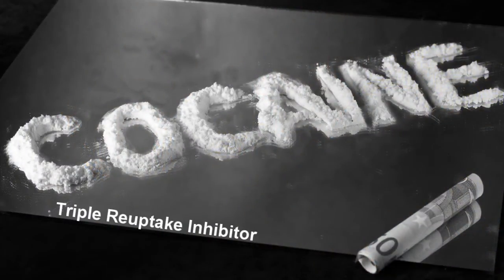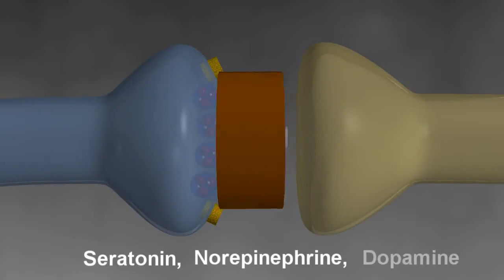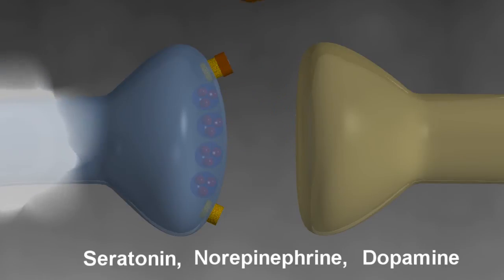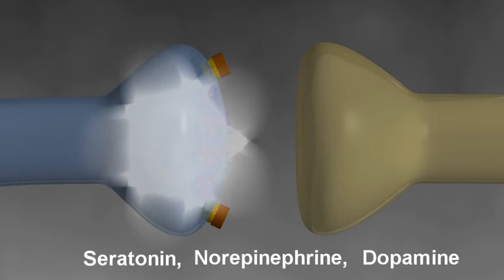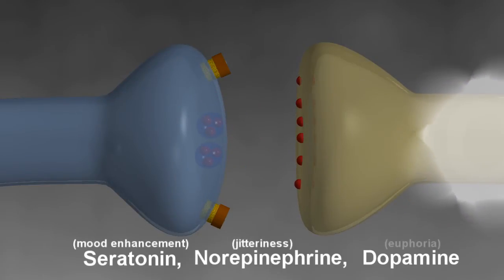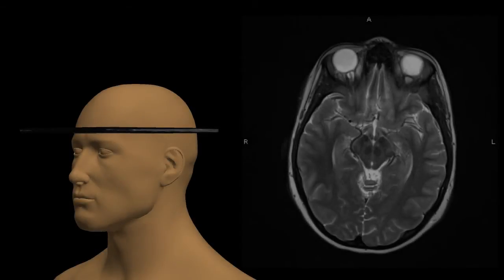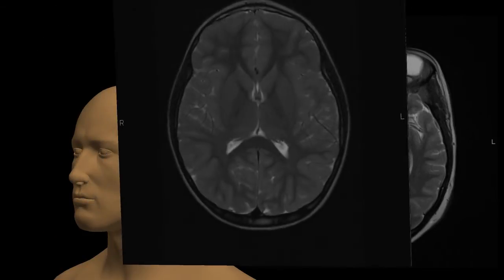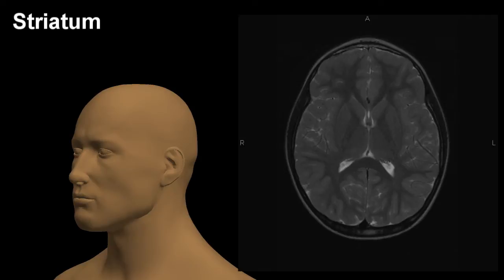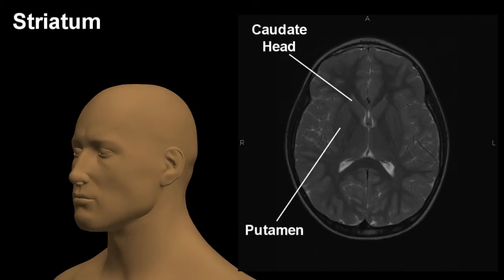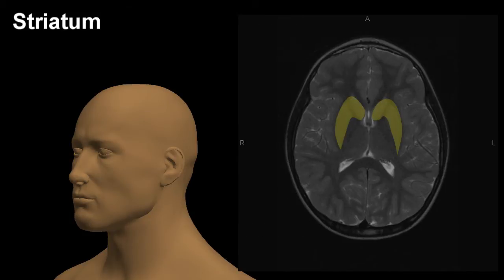Cocaine, a triple reuptake inhibitor or TRI, suppresses the presynaptic reuptake of serotonin, norepinephrine, and dopamine, causing these neurotransmitters to accumulate in the synapse and produce the characteristic features of this drug including mood enhancement, jitteriness, and the addictive euphoria associated with the abrupt accumulation of dopamine in the forebrain. Dopamine is also used in a different area of the brain called the striatum to control fine muscle movements. The striatum consists of two distinct structures called the caudate head and the putamen. When outlined, these structures produce a characteristic comma-shaped area — an appearance worth remembering, as the striatum is the area imaged in nuclear medicine when evaluating a patient for Parkinson's disease.